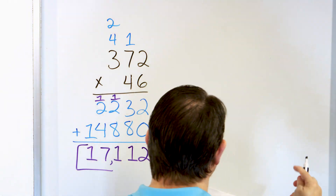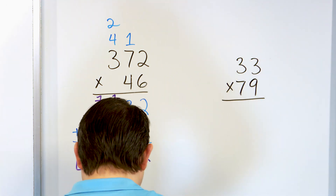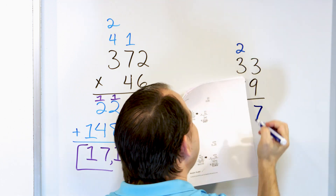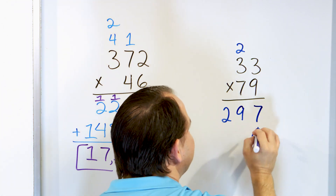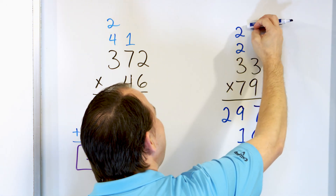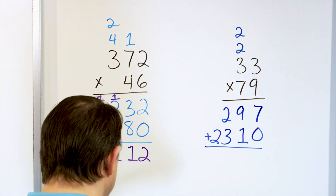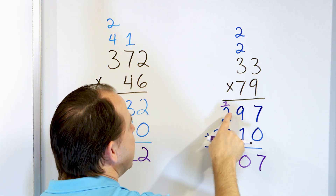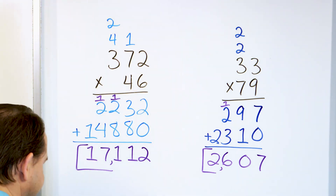We are at the halfway point. Let's take a look at 33 times 79. Nine times three is 27 — seven, carry a two. Nine times three is 27, add two to get 29 — put 29 here, leaving a little gap. Now multiply by the seven — drop a zero. Seven times three is 21 — put a one, carry a two. Seven times three is 21, add two to get 23. Now adding 297 plus 2,310: seven plus zero is seven, nine plus one is 10 — carry a one. That makes three, then three plus three is six, and the two comes here. The answer is 2,607.